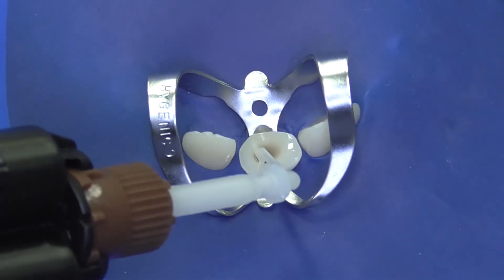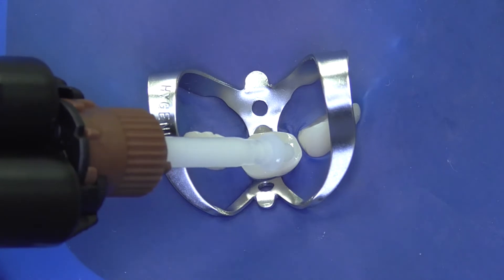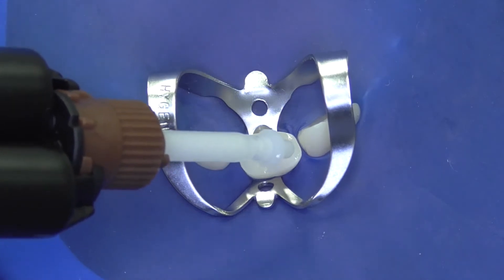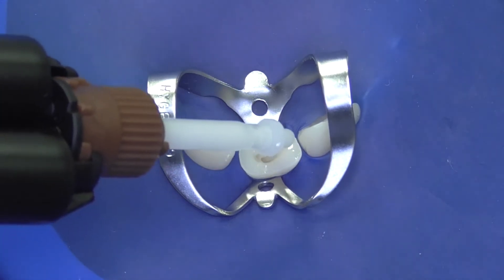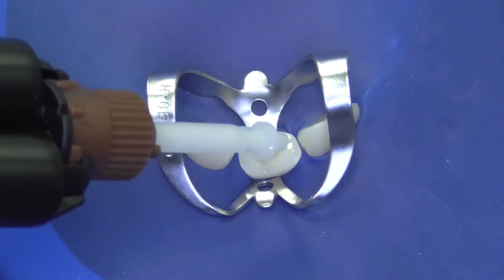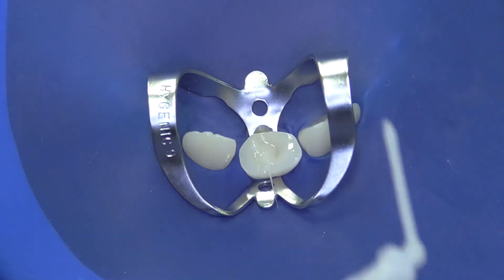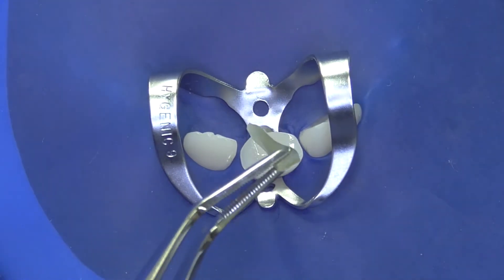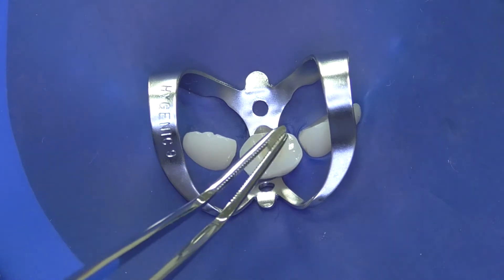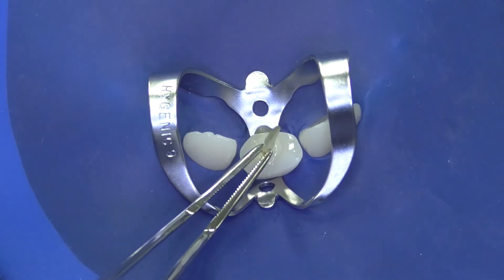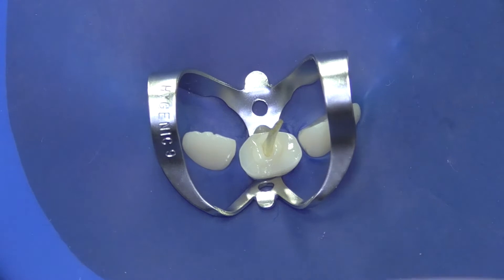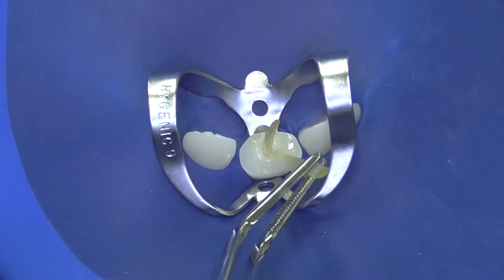Before it starts to set, we are inserting the fiber post, all three pieces of fiber, to the root canal, ensuring that the longest one will go to the deepest part of the root canal opening. Our intention here is to fill the entire coronal opening with as many fibers as possible.